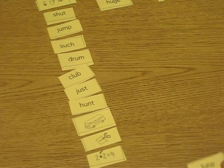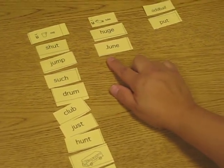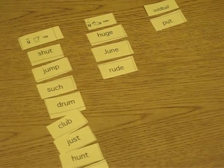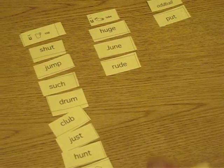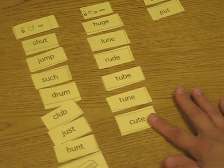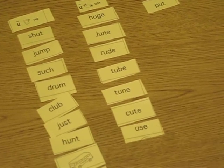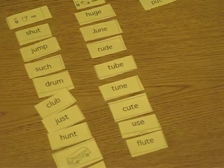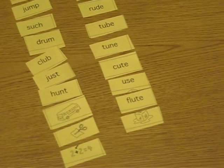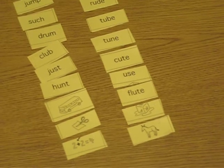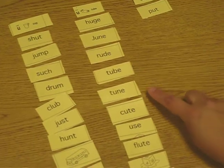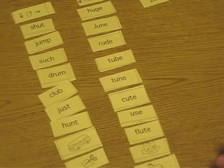In our long vowel sound we have June—notice the J is capital because it's a proper noun. We have rude, tube, tune, cute, use, flute, and then here we have cube C-U-B-E and mule M-U-L-E. Notice that the long U has all the E's on the end to help us spell our words. Okay.